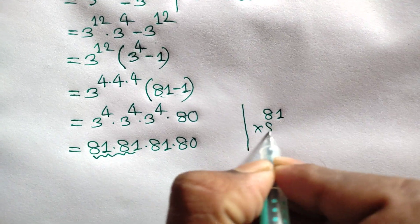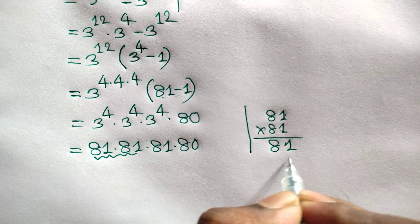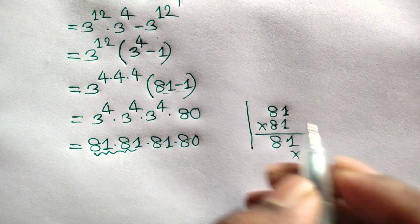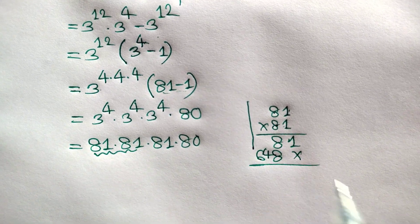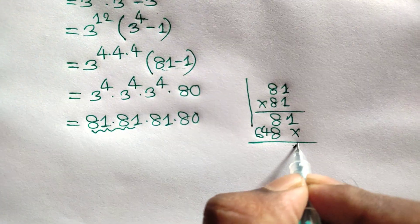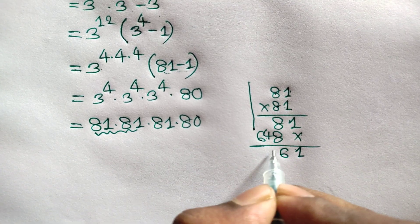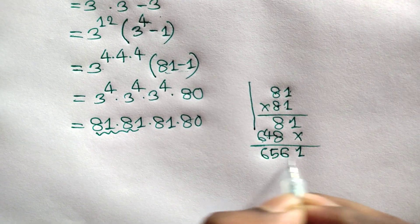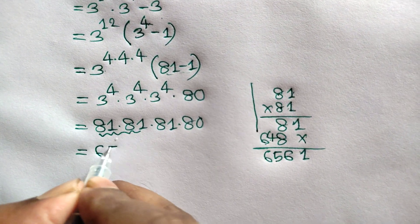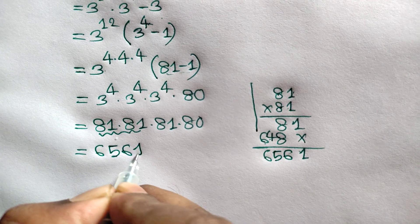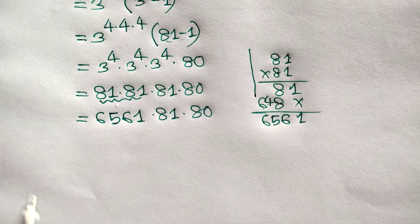Multiplying 81 times 81: 1 times 1 is 1, 1 times 1 is 1, 8 times 1 is 8, 8 times 1 is 8, 8 times 8 is 64. Adding these up: 8 plus 8 is 16, carry 1, 4 plus 1 is 5. So we get 6561.